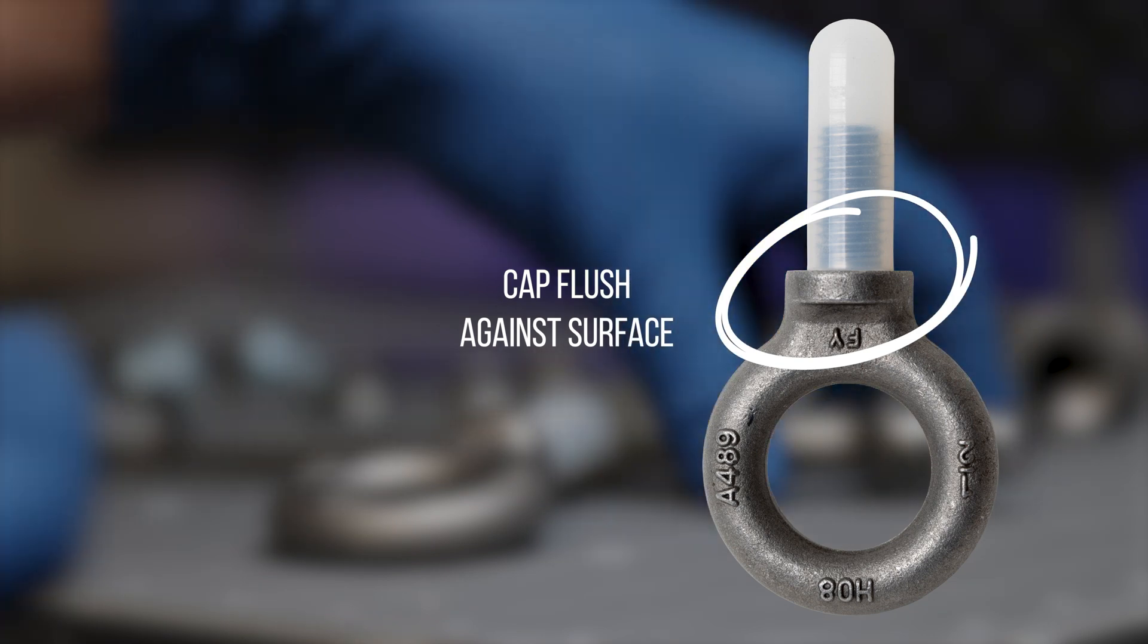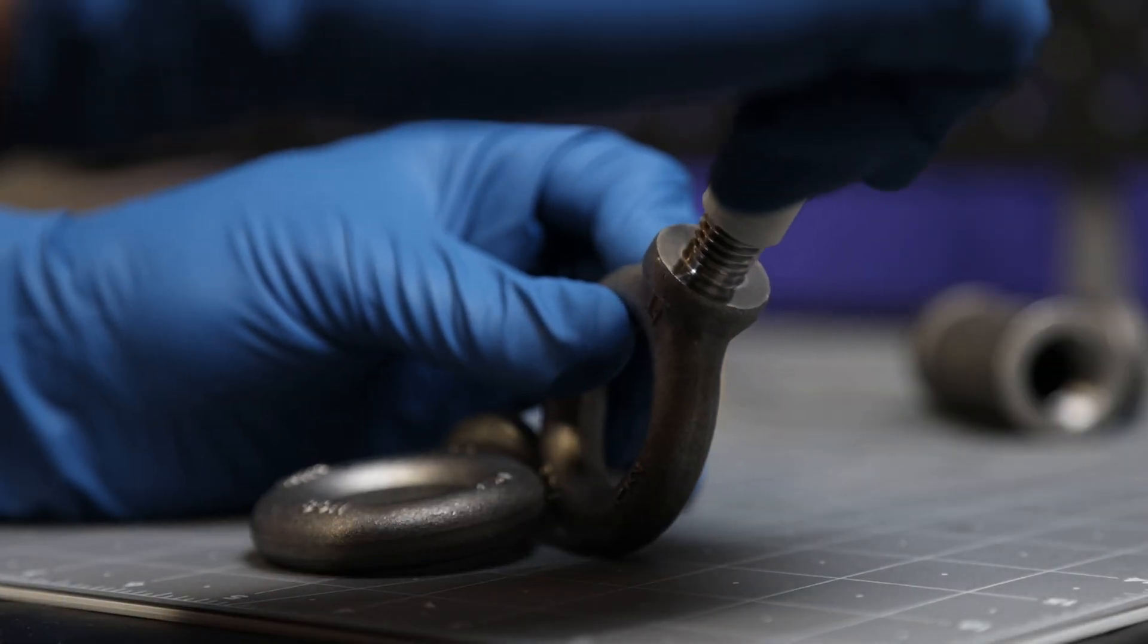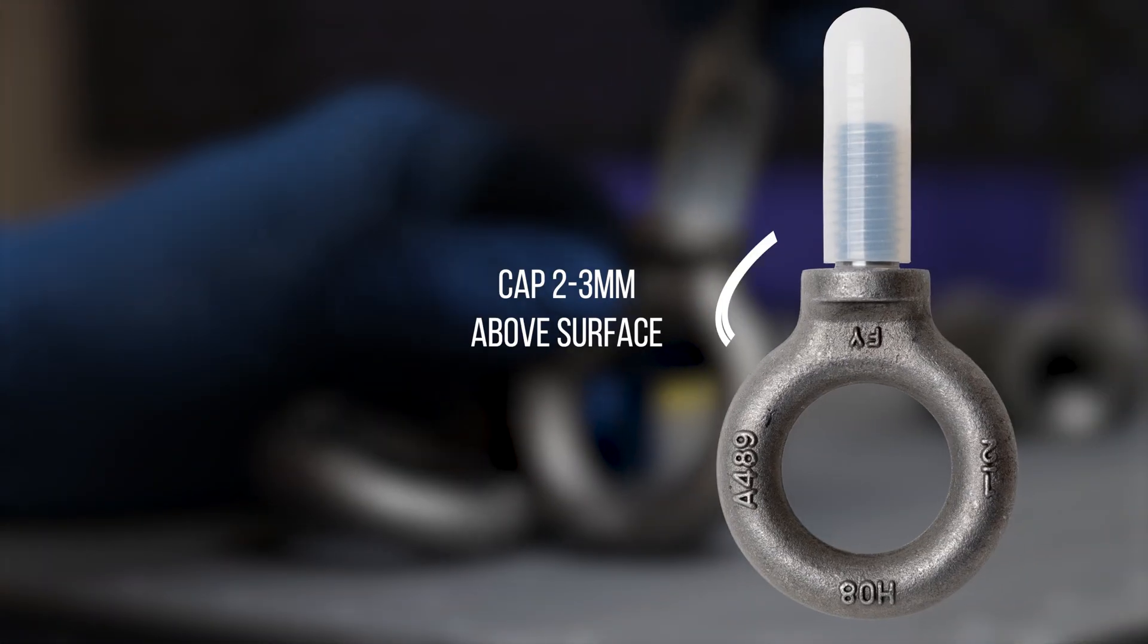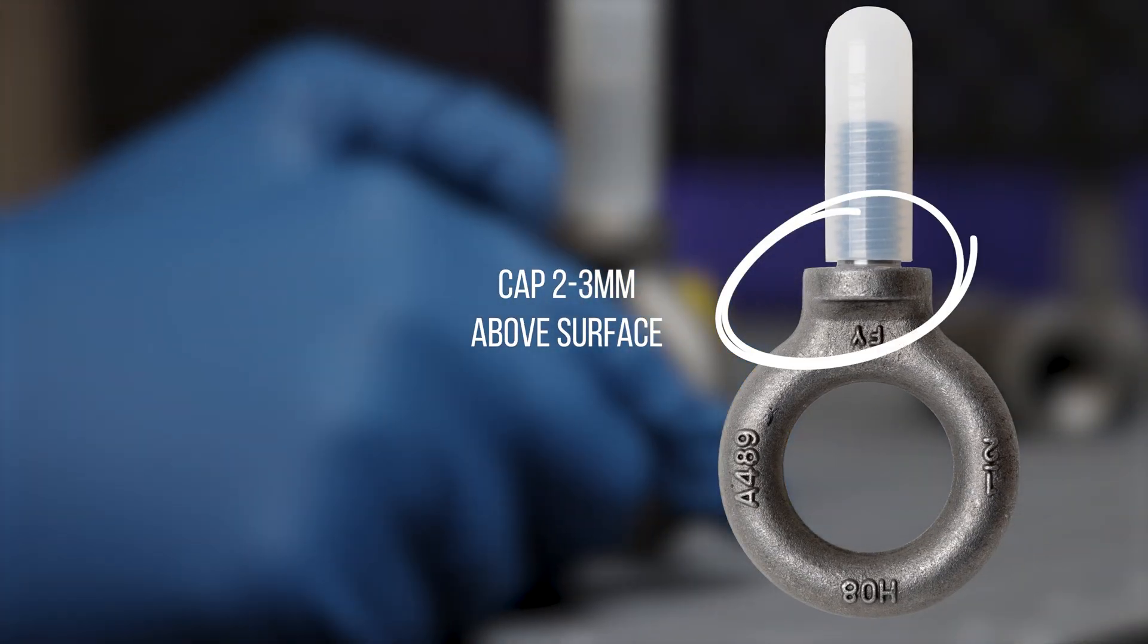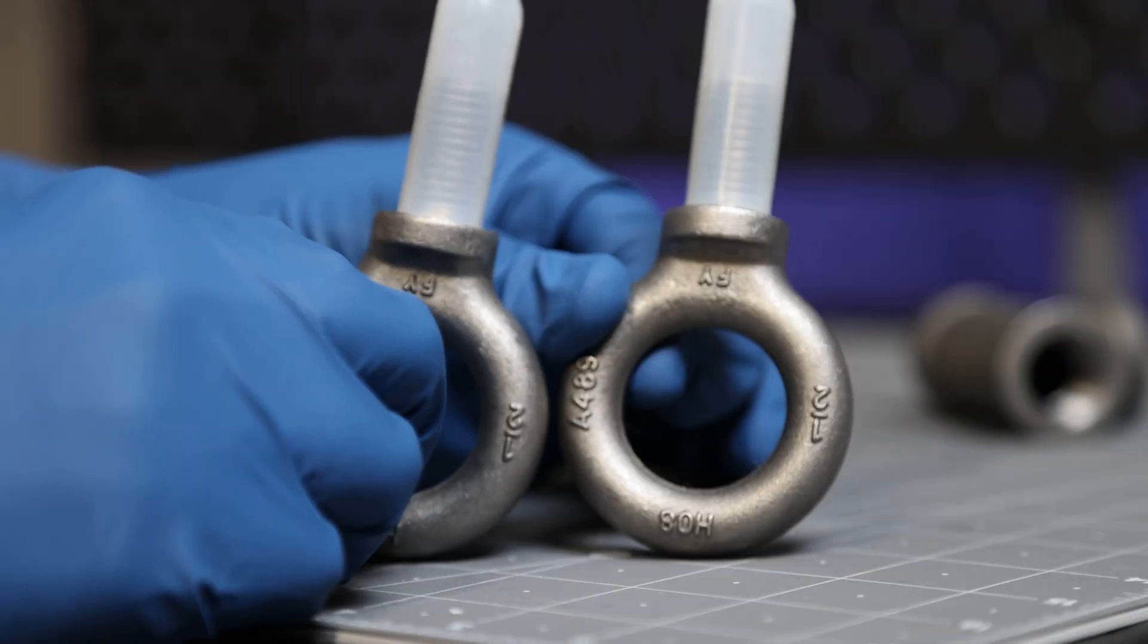We want to see if you can prevent paint buildup by simply raising the cap slightly off the surface versus having the cap flush against the surface. For this experiment the cap will be raised approximately two to three millimeters to prevent the paint from building up and instead tapered down for more of a flush finish.